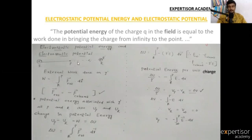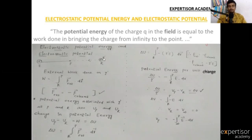At point R and point P, the potential energies are U_P and U_R respectively. As the particle moves and distance varies, work varies, and work variation corresponds to energy variation — potential energy. The change in potential energy, U_P minus U_R, is equal to the work done.